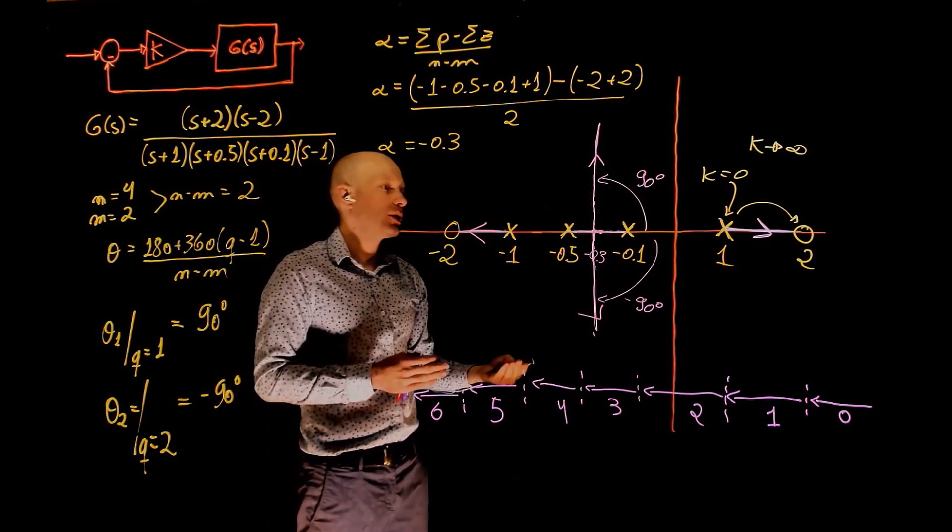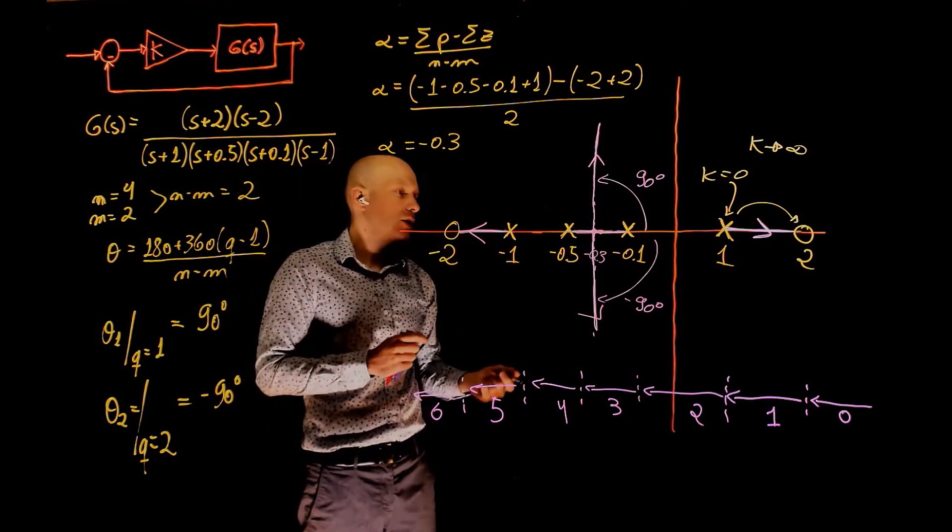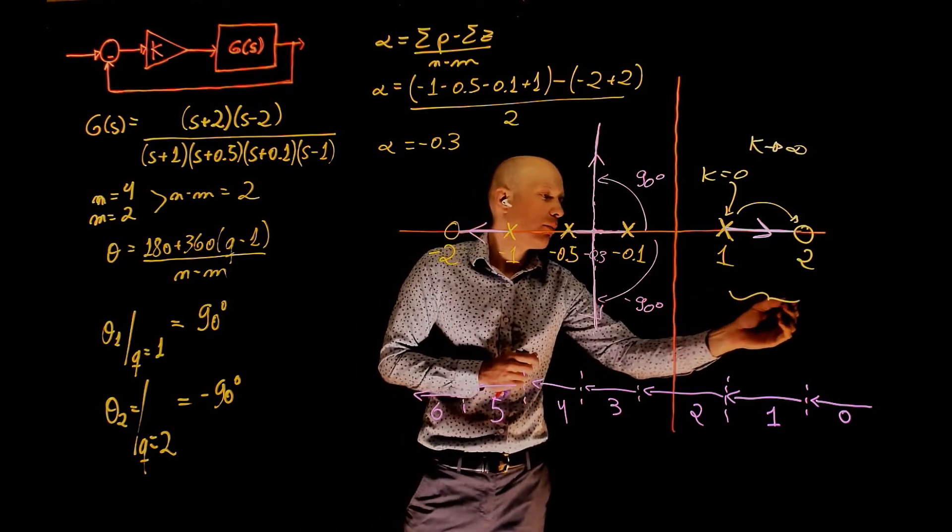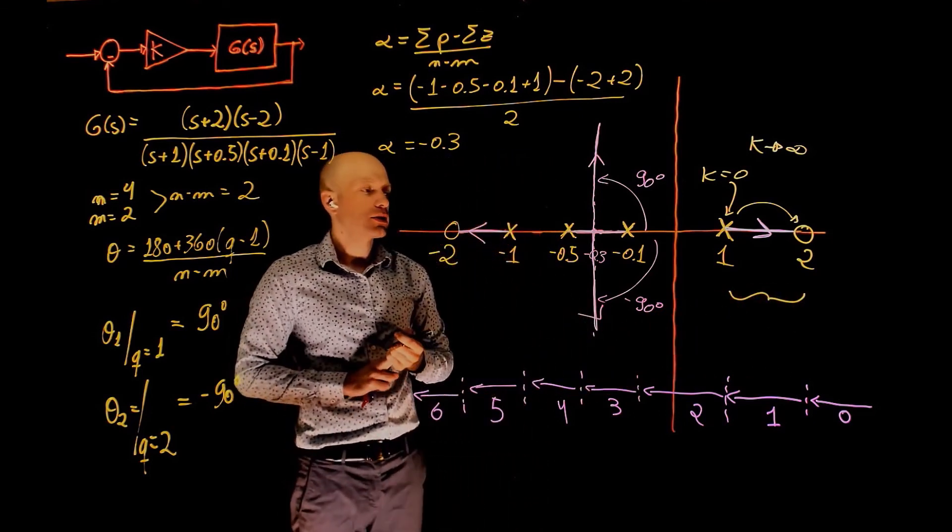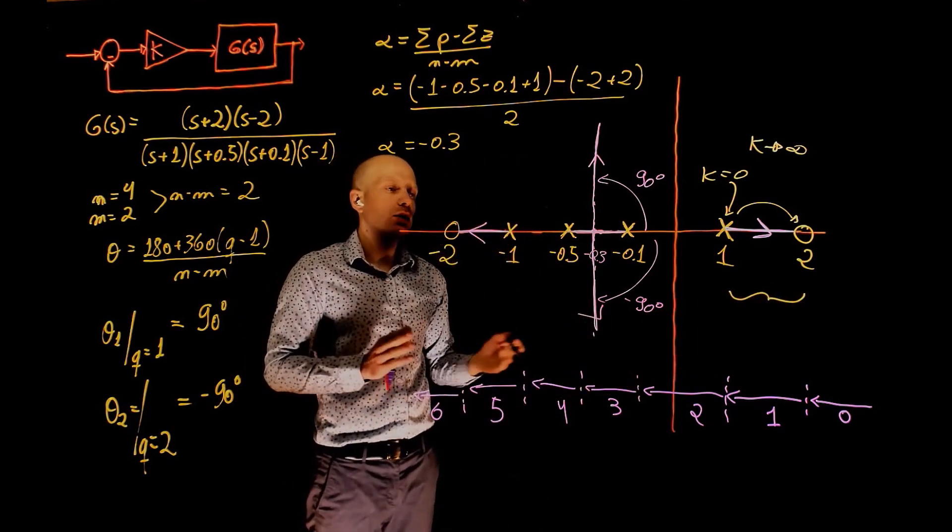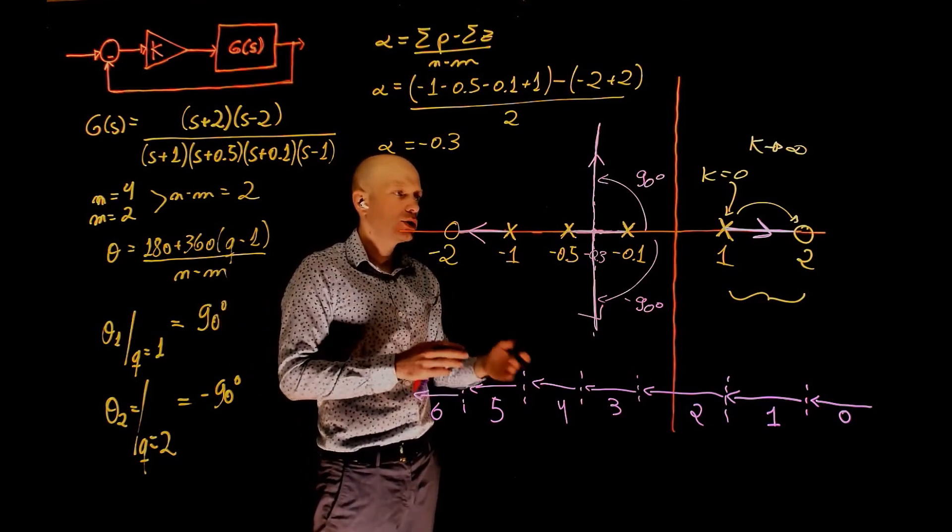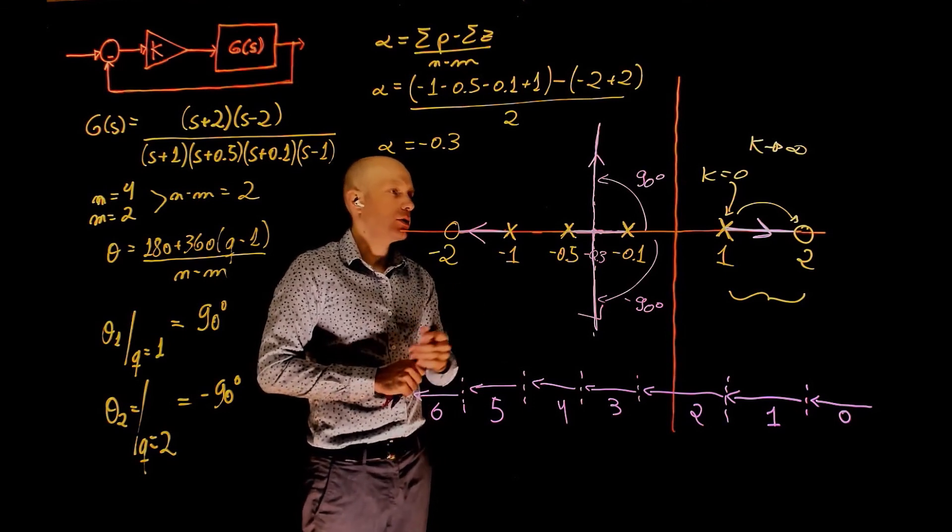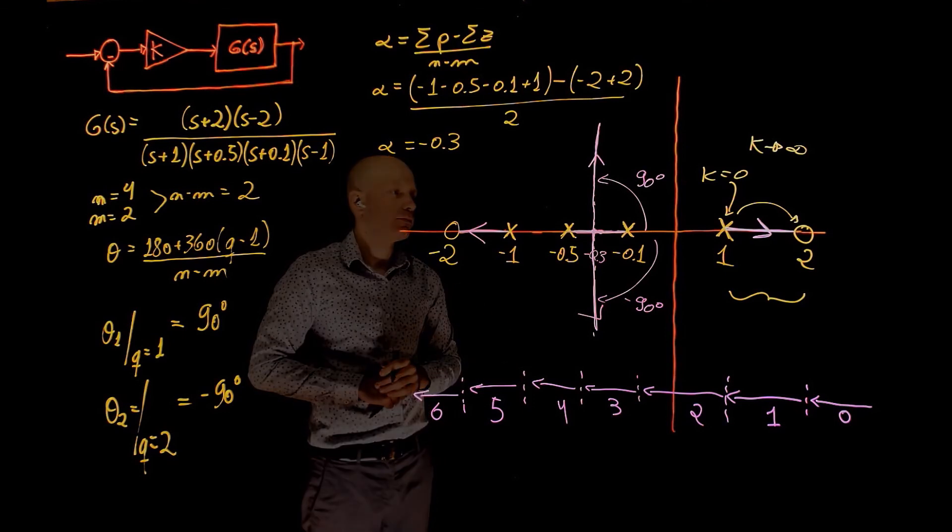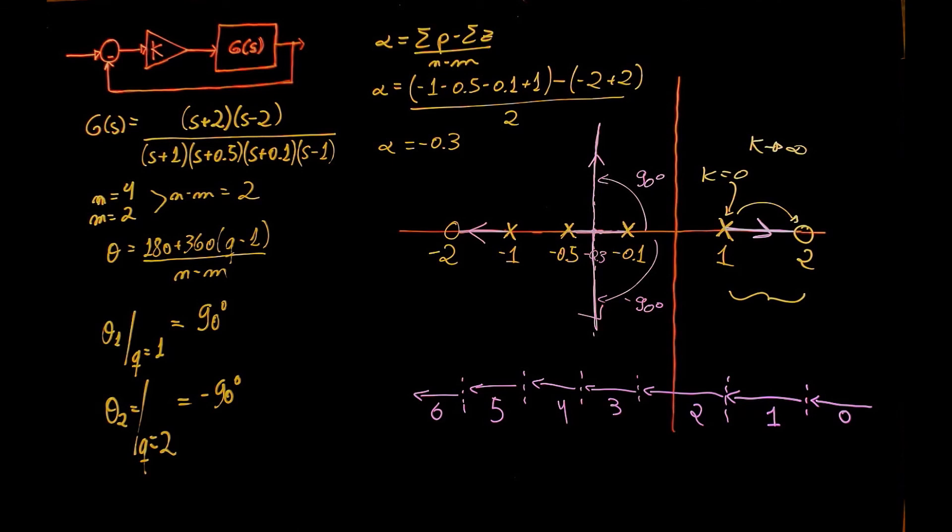What can you conclude from this analysis? Well, I can clearly say that because here we always have a pole on the right side of the s-plane, this system is always unstable regardless of the control value k. This suggests the need for a different controller. This is something you're going to see later on.